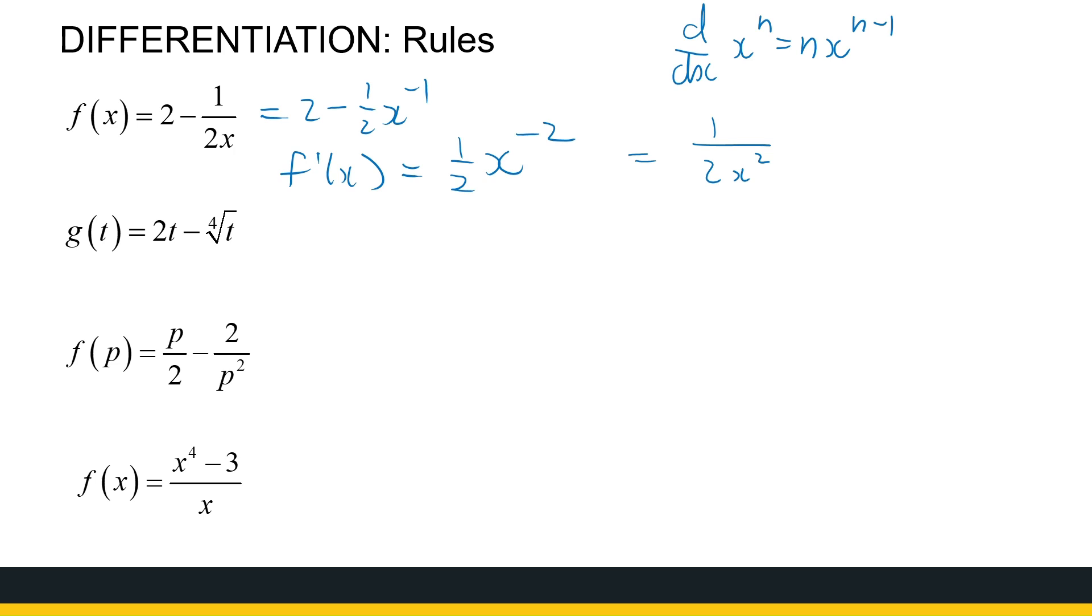All right, the next one, now we've got a root. So I'm going to rewrite that as 2t minus t to the power 1 over 4. Now I can find the derivative nicely. The derivative is 2t to the power 1, so it's 2t to the power 0, so it's just 2, minus a quarter t to the power subtract 1, minus 3 quarters. Quarter minus 1 is minus 3 quarters.